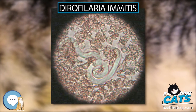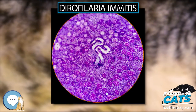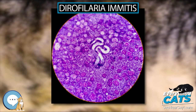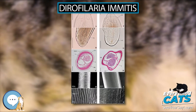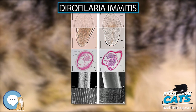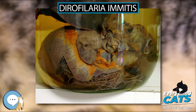By seven months after infection, the adult worms have mated and the females begin giving birth to live young called microfilariae. The microfilariae circulate in the bloodstream for as long as two years, and are ingested by blood-sucking mosquitoes, where development occurs and the cycle repeats.